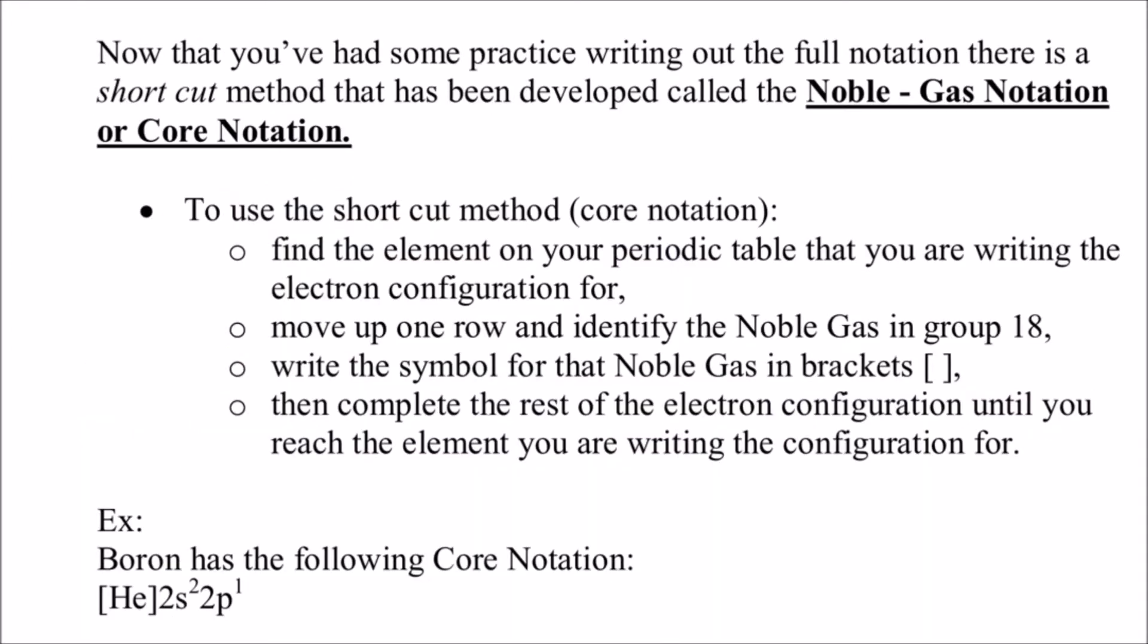The last type of configuration we're going to talk about is called noble gas notation, or core notation. This is a shortcut method on electron configuration, because as we've seen, they can get really long. So this core notation shortens it up for us. You find the element on the periodic table that you're trying to do the electron configuration for. Then move up one row above that element, and all the way over to the noble gases. Write the atomic symbol for that noble gas in brackets, and then you just do the rest of the electron configuration.